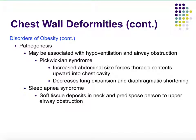With obesity, greater abdominal weight can force the thoracic contents up into the chest cavity. The lungs expand partly because the diaphragm flattens, but if abdominal contents are pushing upward, the diaphragm can't contract or flatten. Our ability for the lungs to expand reduces, and if the lungs can't expand, pressure inside won't decrease — so less air is brought in.